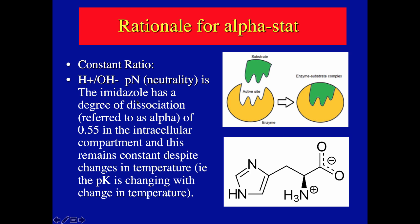This has become one of the rationales for alpha stat: to maintain the ideal electrochemical environment inside the intracellular fluid. The key is the amino acid histidine, which has an imidazole ring with a degree of dissociation referred to as alpha — approximately 0.55 in the intracellular compartments — which remains constant despite temperature changes. As the pK changes with temperature, the alpha remains constant. Histidine residues with the imidazole moiety are very prominent in the active sites of enzymes, and maintaining this electrochemical environment preserves the quaternary structure of those active sites, allowing enzymes to maintain their function despite temperature changes.